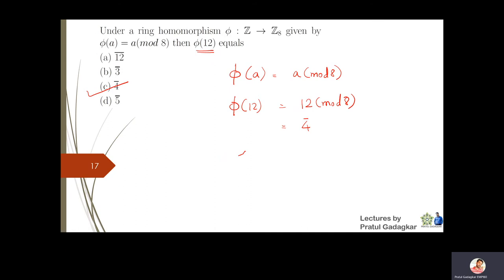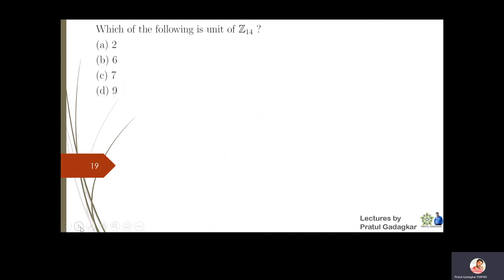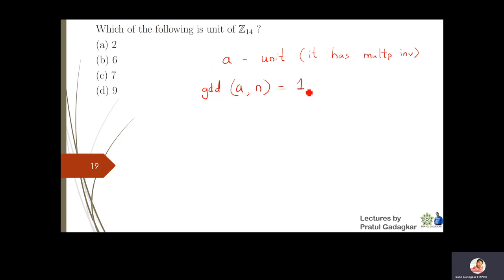The next question: which of the following is a unit in Z14? An element a is a unit if it has a multiplicative inverse, which happens when gcd(a, 14)=1. Among the candidates, 2 is not (gcd=2), 4 is not (gcd=2), 7 is not (gcd=7), but gcd(9,14)=1, so 9̄ is the unit in Z14.